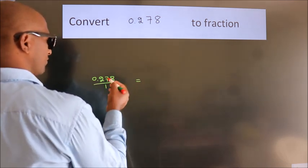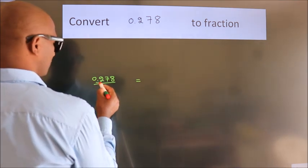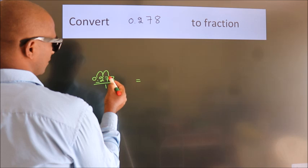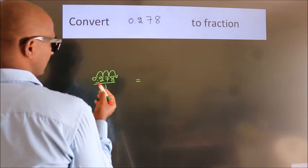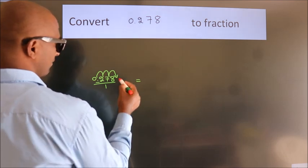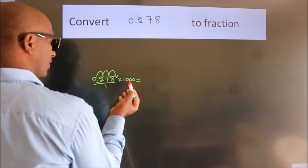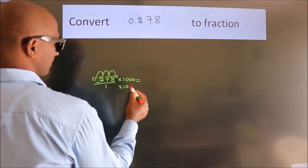To convert this to fraction, we have to move this decimal after 1, 2, 3 numbers. To move this decimal after 3 numbers, we have to multiply it with 1000. Whatever number you are multiplying in the numerator, in the denominator also do the same.